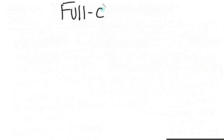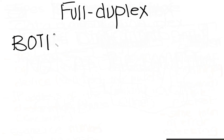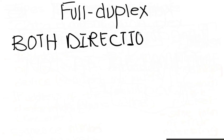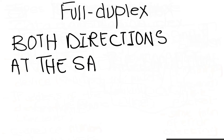Full-duplex mode occurs when data can be sent in both directions at the same time. For example, data can be sent from A to B and from B to A along the same transmission line simultaneously. An example of this would be a broadband internet connection.